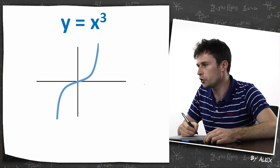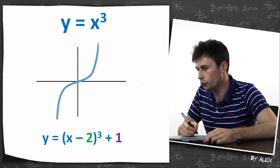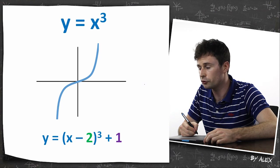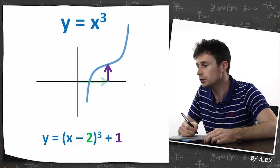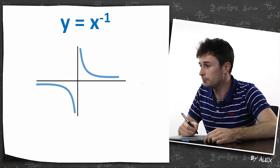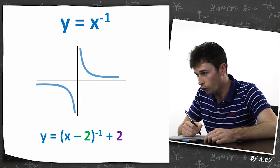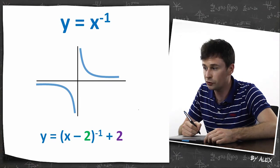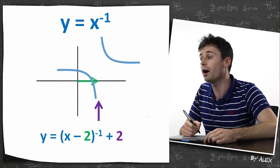So if you've got y equals x cubed, like this one, and you want to change it into y minus two cubed plus one, well, all you have to do is plus two on the x-axis and plus one on the y-axis. Same deal with this one. This is y equals x to the negative one. But if you have it in this form, where you've got negative two on the x, it means you move it two over, and then plus two means you move it two up as well.